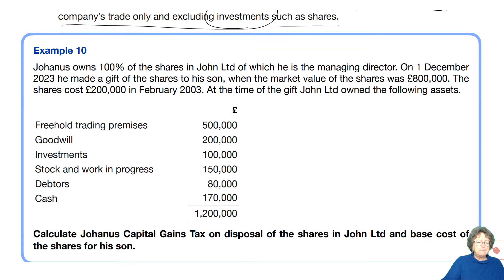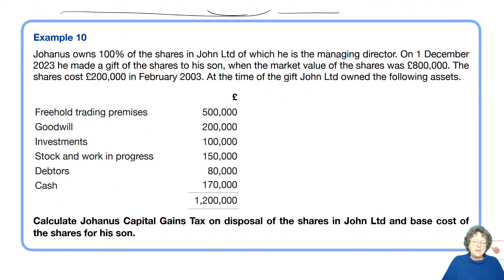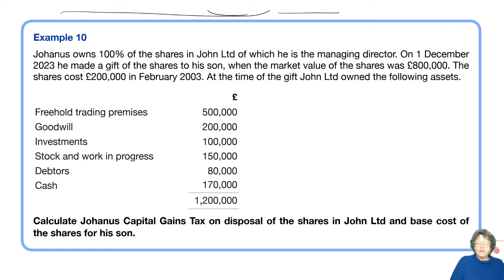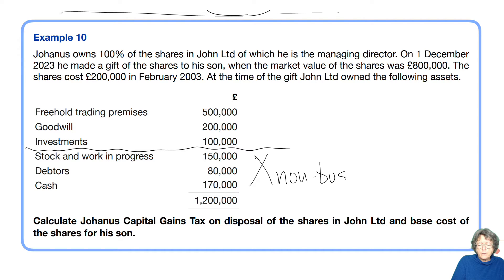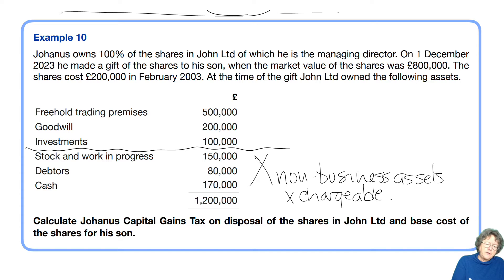Let's look at example number 10. Johannes owns 100% of the shares in John Limited, of which he's the marketing director. On the 1st of December 2023, he made a gift of shares to his son when the market value of the shares was £800,000. The cost of the shares had been £200,000. At the time of the gift, John Limited owned premises, goodwill, investments, stock, debtors and cash. The stock, debtors and cash are non-business assets and are not chargeable. The remaining assets come to £800,000 and are chargeable assets, though the investments are a non-business chargeable asset.